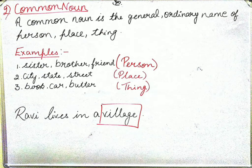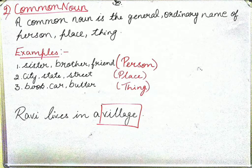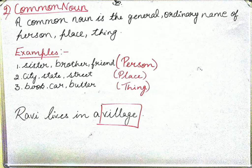Common noun is a general or ordinary name of a person, place, or thing. For example: sister, brother, friend — these are persons but not given a specific proper name, so they are common nouns. City, state, and street are also common nouns because we have not referred to any specific city, state, or street. Book, car, and butter are also common nouns.